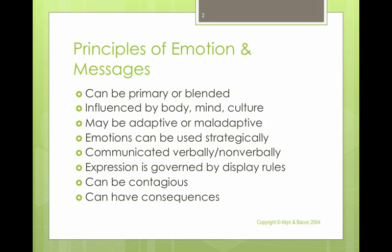It's important to understand that emotions may be adaptive or maladaptive. Adaptive emotions help you adjust to situations appropriately. For example, feeling anxious about giving a presentation may cause you to prepare more extensively. However, if emotions are maladaptive, they get in the way of accomplishing your goals. For instance, if you're so nervous before a driving test that you hit a parked car, that nervousness has prevented you from achieving the goal of passing.